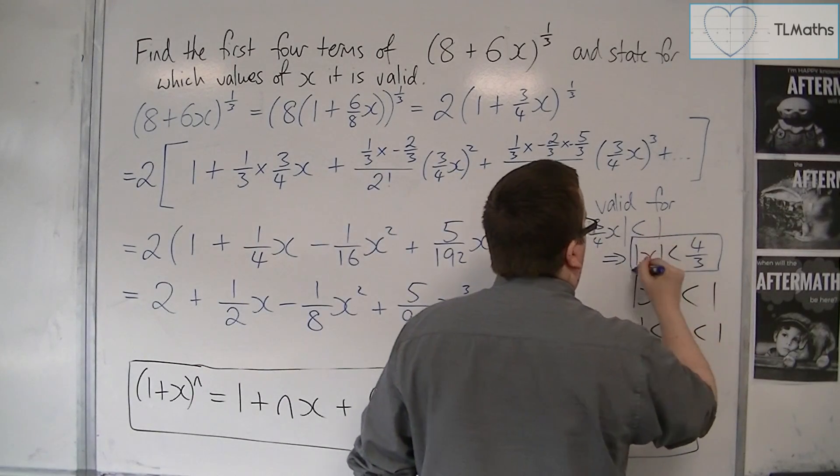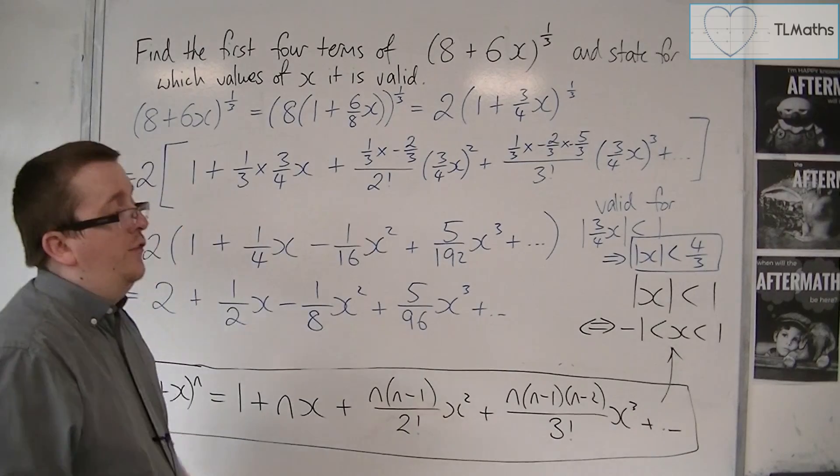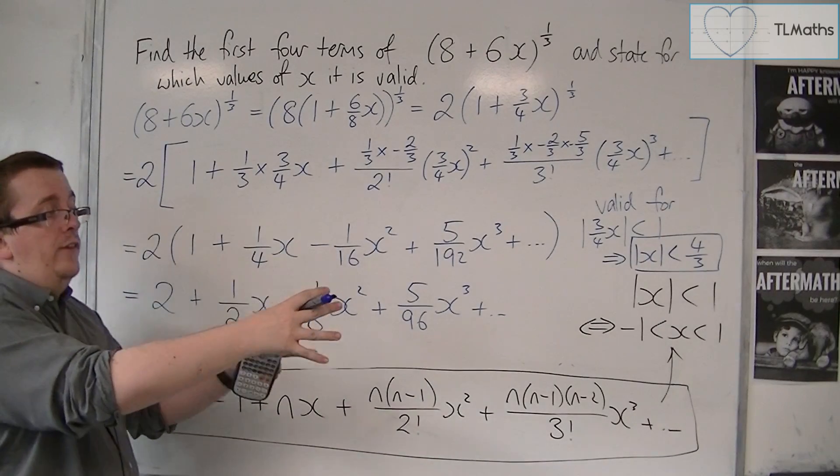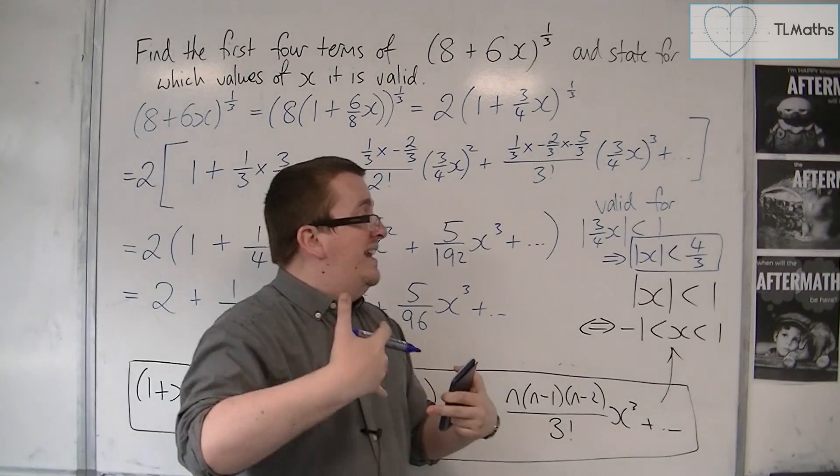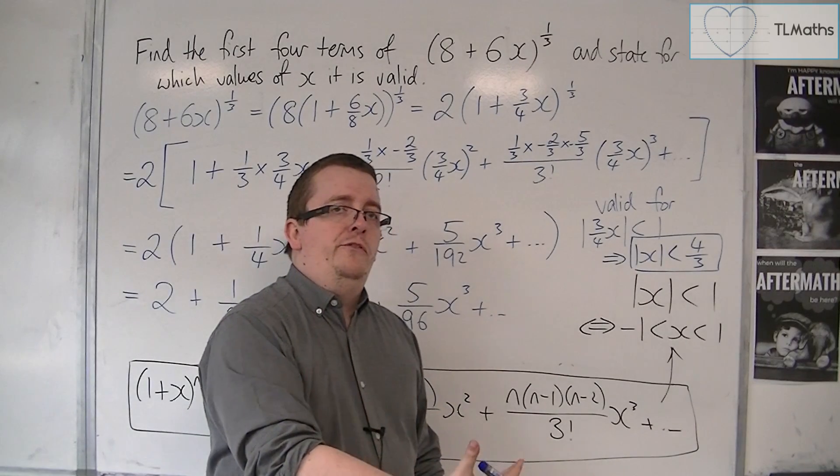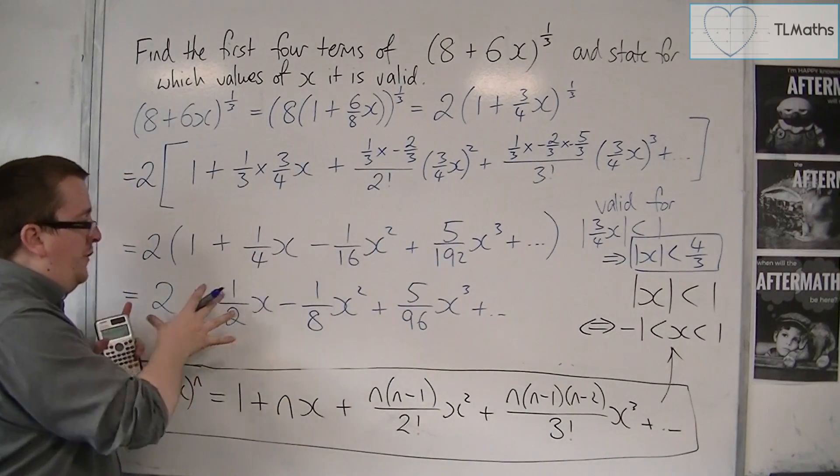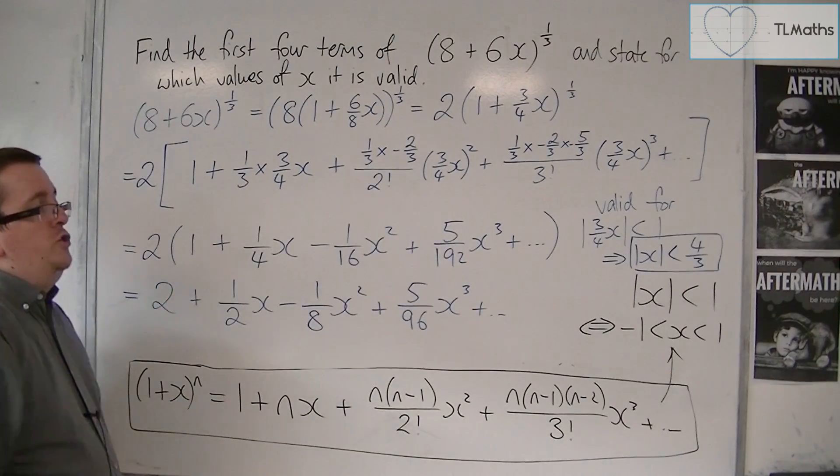And so these are the values of x for which it is valid. It's valid between -4/3 and positive 4/3, and so there is the expansion and the range of validity.